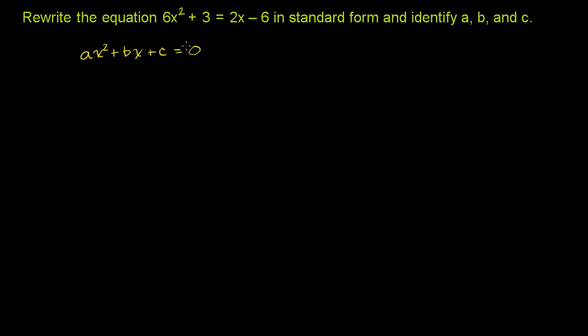So let me rewrite our original equation. We have 6x squared plus 3 is equal to 2x minus 6. I essentially want to get everything on the left-hand side, so I'll subtract 2x from both sides.